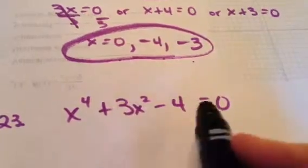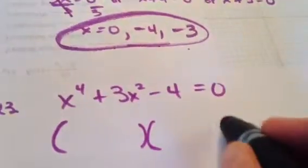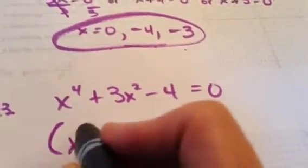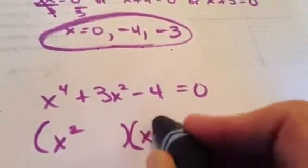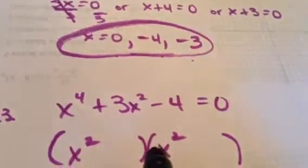So there's nothing here in common, and it already equals zero. But this is not bad, because look at this. x squared times x squared is going to give me x to the fourth. Okay, and I need an x squared in the middle, so it looks like it's going to work.